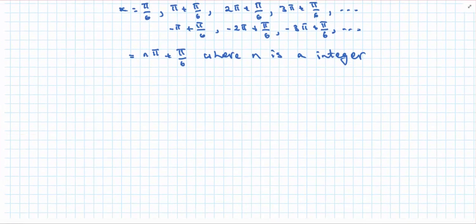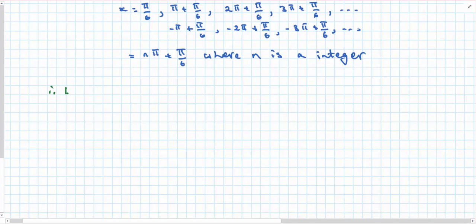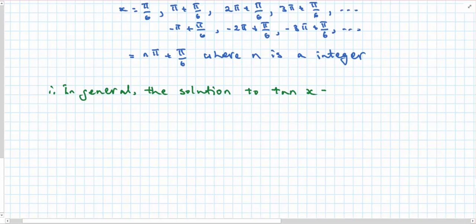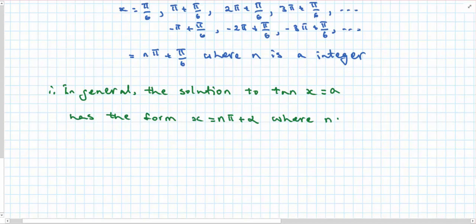So this is the simplest case of all, where x equals nπ plus π/6 where n is an integer. Therefore, in general, the solution to tan x equals A has the form x equals nπ plus α, where n is an integer.